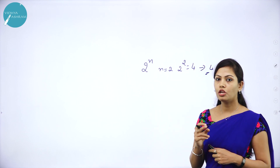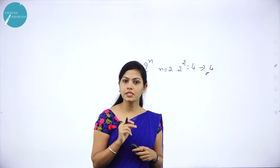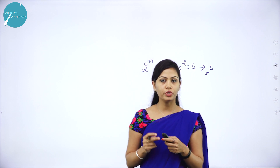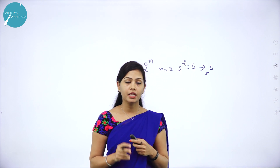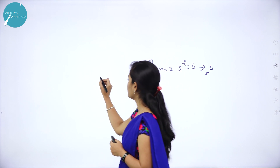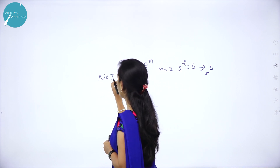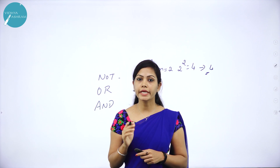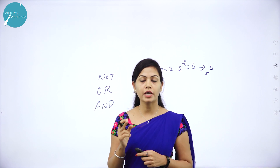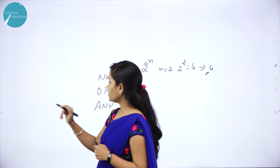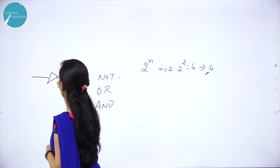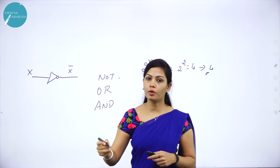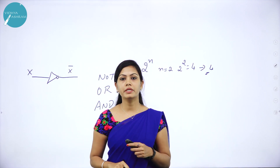And I have explained logic gates. A gate is an electronic circuit which operates on one or more input signals to produce an output signal. There are three types of logic gates: NOT gate, OR gate, and AND gate. NOT gate is a gate which has only one input and one output. The logical symbol for NOT gate is x, x complement, y, y complement. So, NOT gate is called as complementation.